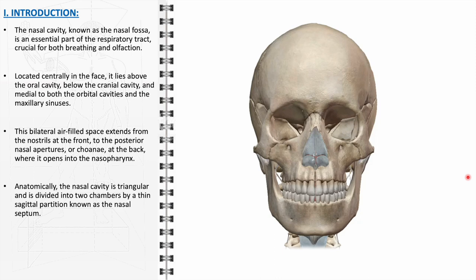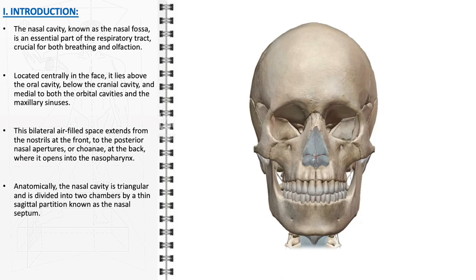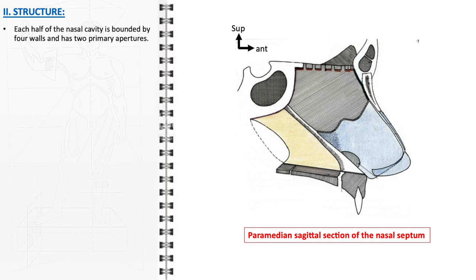The septum, made of bone and cartilage, can sometimes be deviated, leading to common clinical conditions like nasal obstruction and breathing difficulties. Each chamber of the nasal cavity is lined with a mucous membrane, rich in blood vessels and nerves, which helps in trapping dust, pathogens, and foreign particles, thus protecting deeper structures of the respiratory tract. The mucous lining also contains olfactory receptors, essential for the sense of smell. The structure of each half of the nasal cavity is defined by four distinct walls, with two primary apertures facilitating its functions.